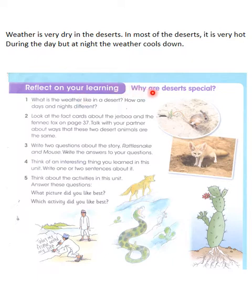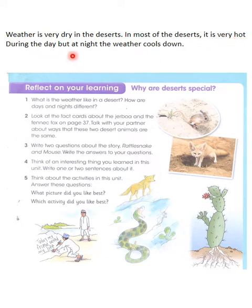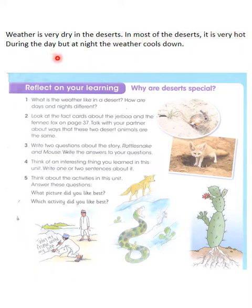Next, reflect on your learning. Why are deserts special? What is the weather like in a desert? How are days and nights different? Weather is very dry in deserts. This is the answer to question number one: what is the weather like in a desert? In most deserts it's very hot during the day, but at night the weather cools down. It is given in your book.